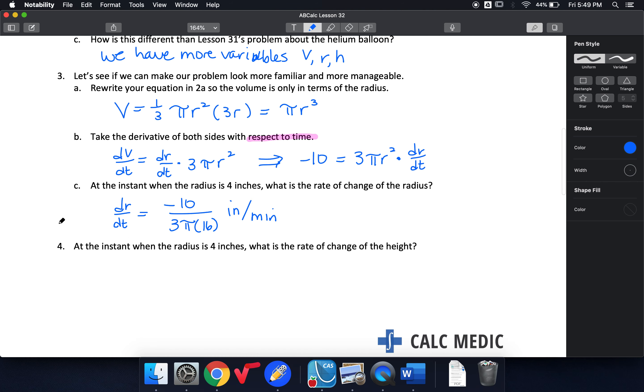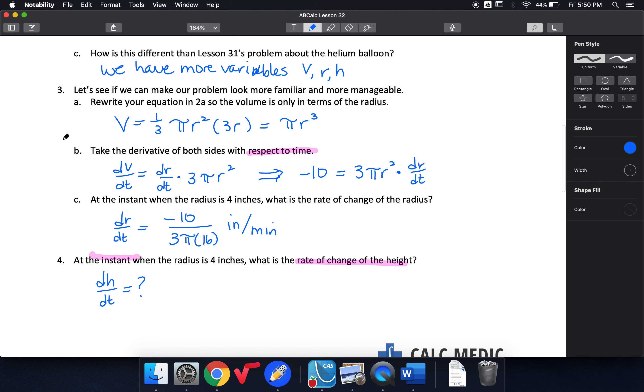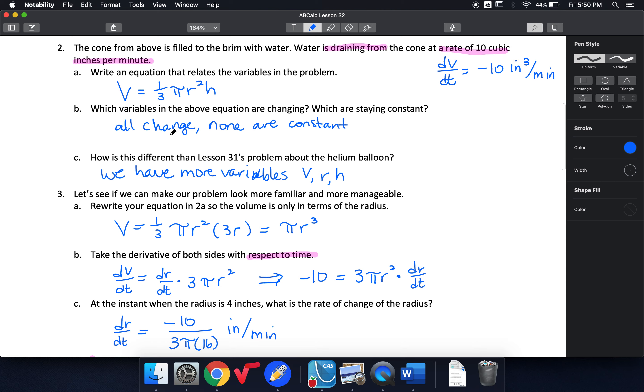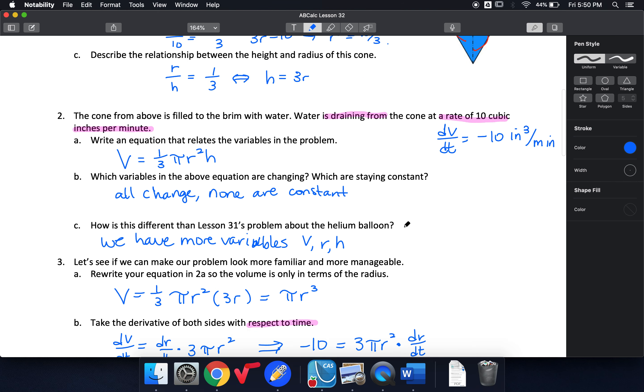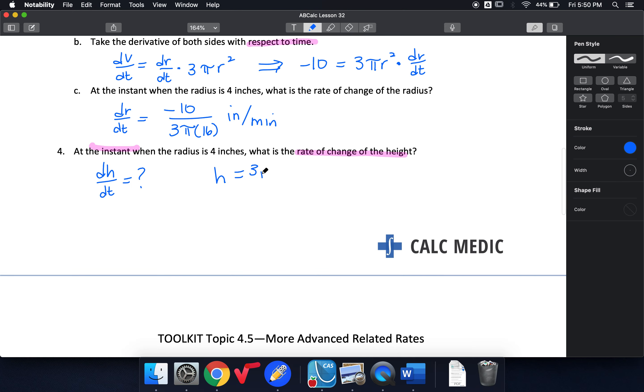And now at the instant when the radius is 4, what is the rate of change of height? So this is instantaneous rate of change. So I'm looking for dh/dt. That's what I want to find. Well, remember up above, we already know that our height and radius are connected. So I can take the derivative of my h equals 3r. I can derive both sides with respect to t. So dh/dt is equal to 3 dr/dt.